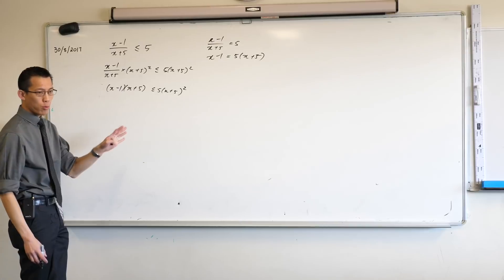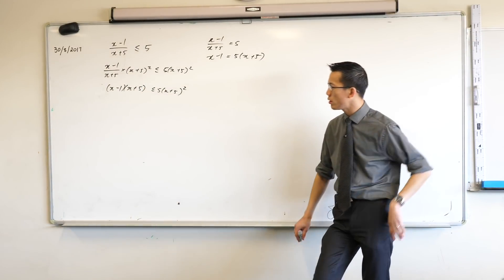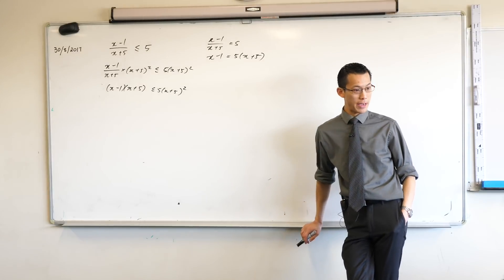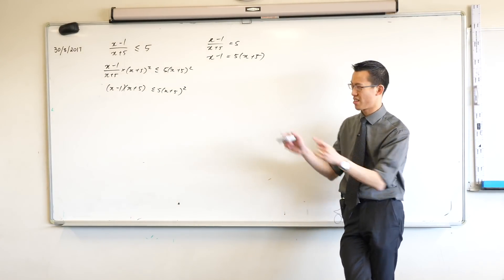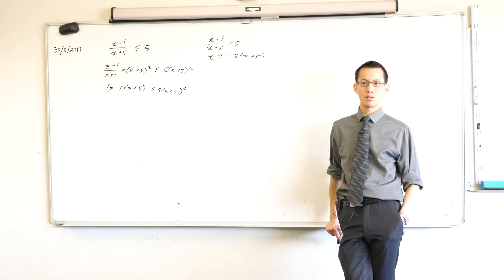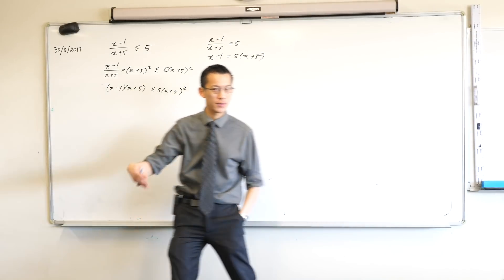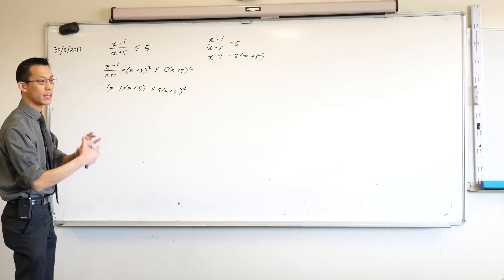Now at this point what would you do? You could expand everything and then reform a whole new quadratic, rather than two you'd have one. That's one option. Is there anything else we could possibly do? Yeah look, x plus 5 is already there, it's already in a factorized form so we just need to tweak it a little bit to make it obvious.